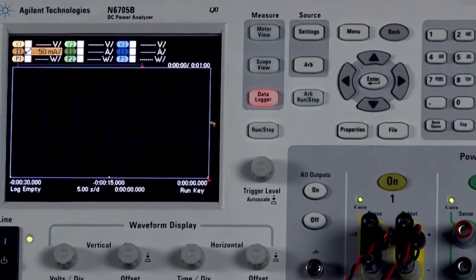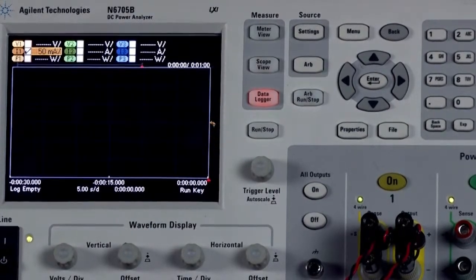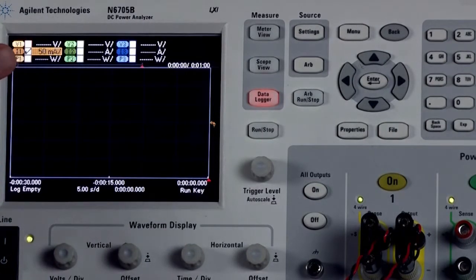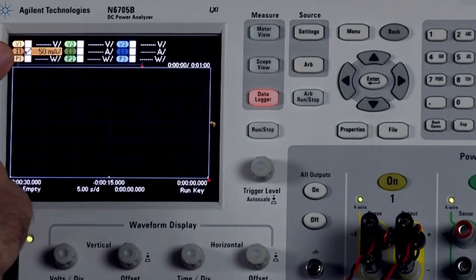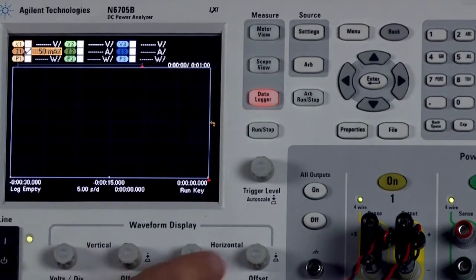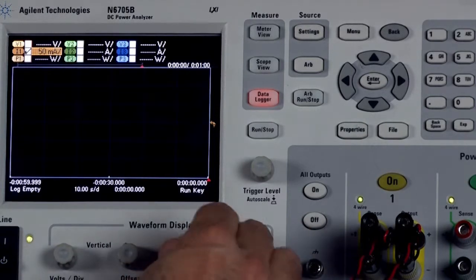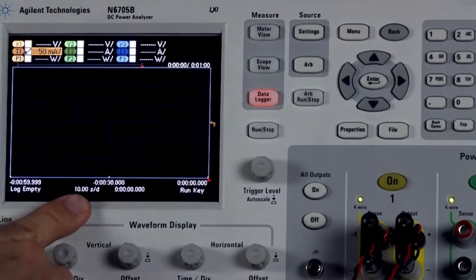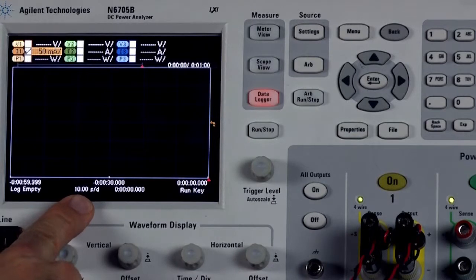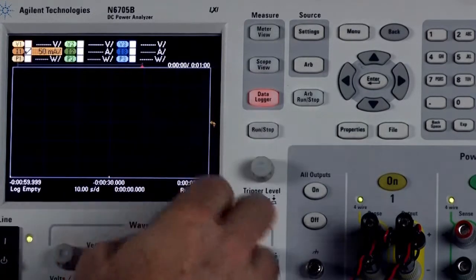Step four is where we run our data logger. So I've got the data logger set here. I'm going to make a few adjustments. You can see that on the screen we're at 50 milliamps per division, that is appropriate, but I do want to change the horizontal to 10 seconds per division.